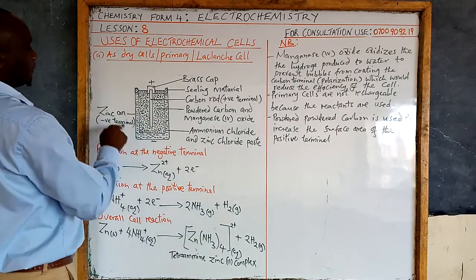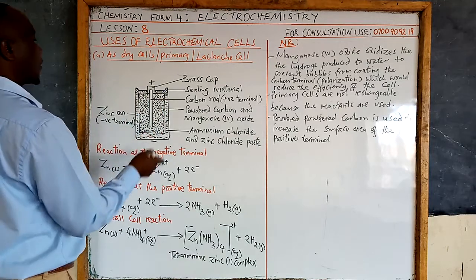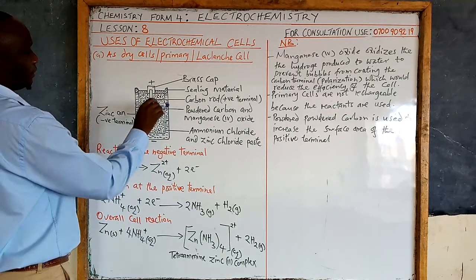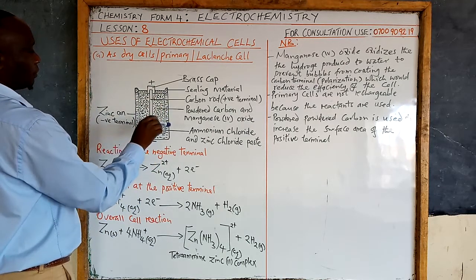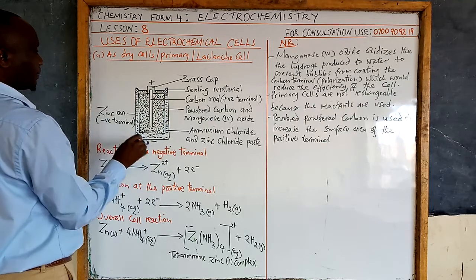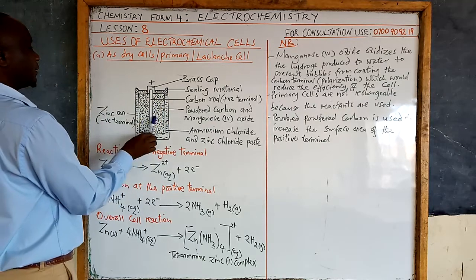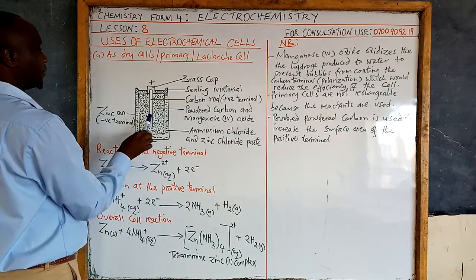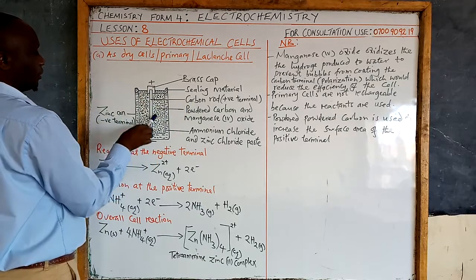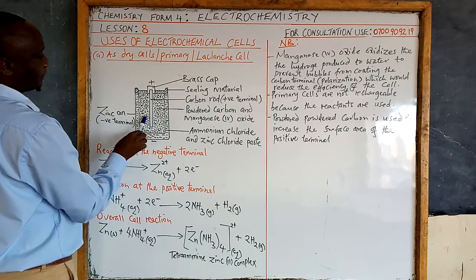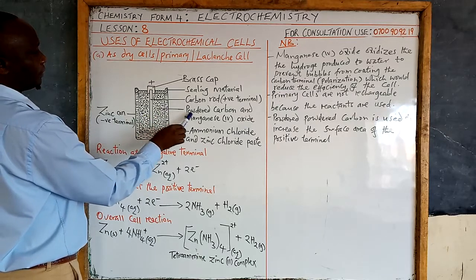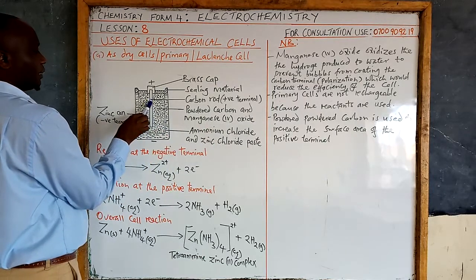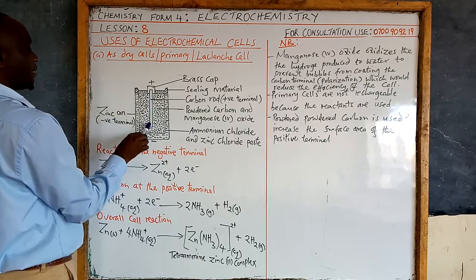The first part is the outer casing. Then we have a layer which is a mixture of ammonium chloride and zinc chloride paste. Then we have this internal part — the dotted part — which is a mixture of powdered carbon in touch with the rod. The dotted part represents the powdered carbon and manganese(IV) oxide.